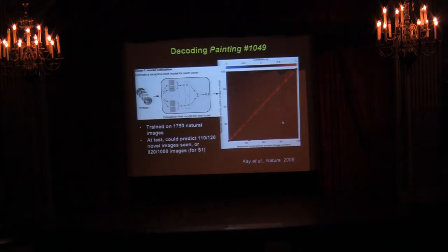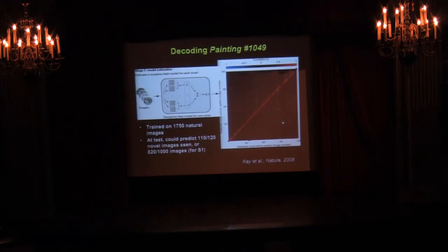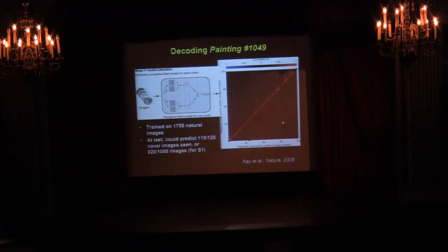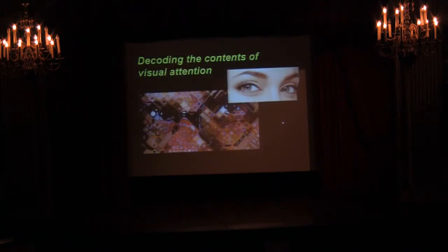That said, these demonstrations, while very cool, in a sense we're not gathering more information than we had before. You could scan the person's brain and, yes, clearly they're looking at Louvre painting 1049 — or you could just look over at them. You didn't need a multimillion dollar scanner or fancy analyses to determine that. That is not the case when we talk about mental events — subjective mental events that are private and not evident from the external stimulus.